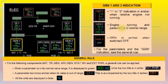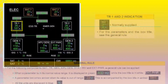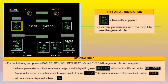Generator 1 or 2 indication shows in amber when the relative engine is not running, and in green when the parameter is in the normal range and the engine is running. GEN is in amber when switched off, and an OFF indication appears in white.